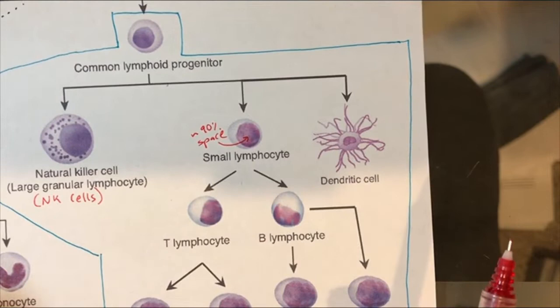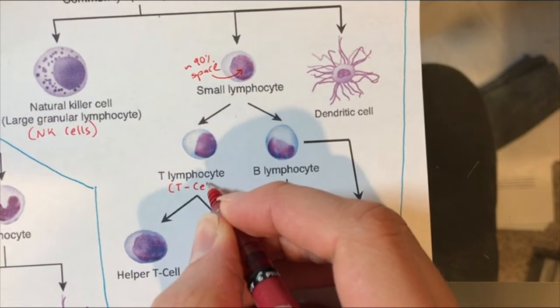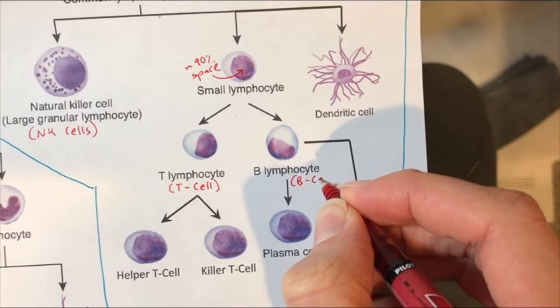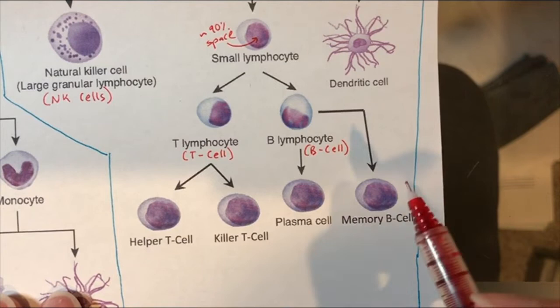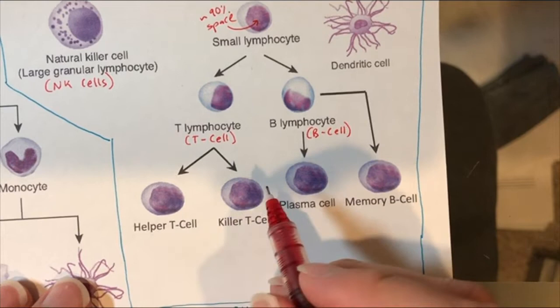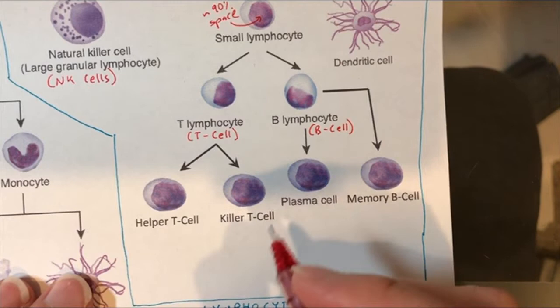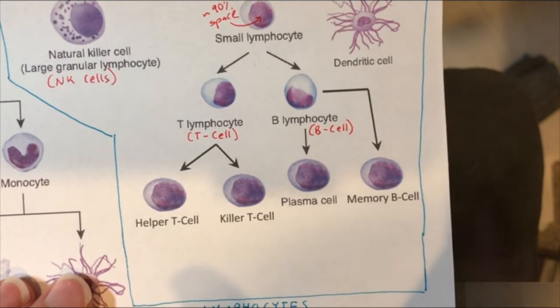The small lymphocyte here can turn into two different cells: a T lymphocyte or a B lymphocyte, also known as a T cell and B cell. The T cells can give rise to certain cell types, and the B cell can also give rise to two different cell types. Starting with the T cell — a T cell can turn into a helper T cell or a killer T cell, which we'll go into in more detail later. The names can get pretty confusing because there are a lot of different names for these things.